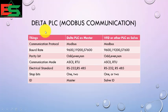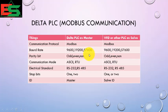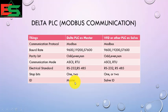Regarding the communication method: Delta PLC acts as master, and VFD or other PLCs act as slaves. Both should be on Modbus communication. The baud rate should be the same on both sides, for example 9600. The parity bit should also match — if you use odd parity in Delta PLC as master, the slave must also use odd parity. The communication mode (ASCII or RTU) and electrical standard should both be the same, stop bits should be the same, and the slave ID should be unique for each slave device.